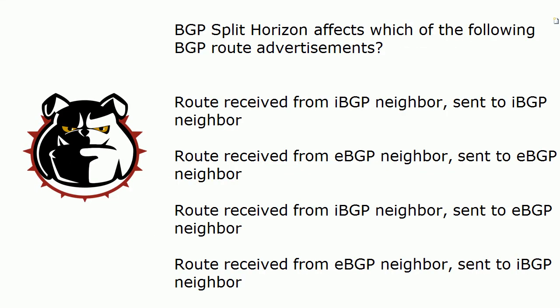BGP split horizon. We know by the very operation of BGP that split horizon is going to work a lot differently than say distance vector split horizon. Which of these following BGP route advertisement scenarios will be affected by the rule of split horizon?